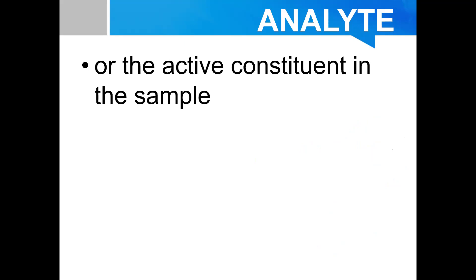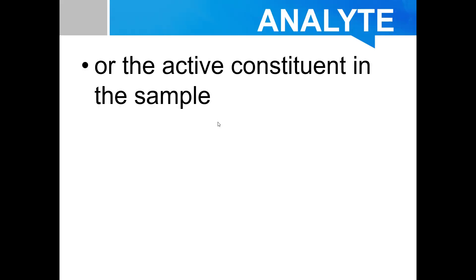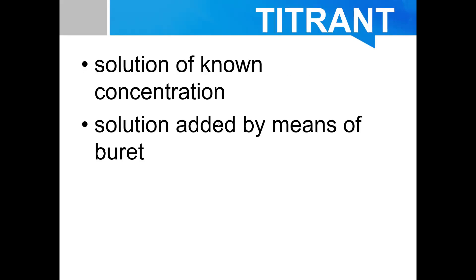Before we move on to the computation, let us define some terminologies used in titrimetric analysis. The sample class is called the analyte. If it is a mixture, then the component being investigated is called the analyte — or the active constituent. In our example, the analyte is hydrochloric acid since it is our target for the analysis.